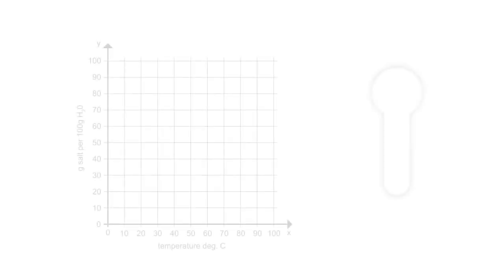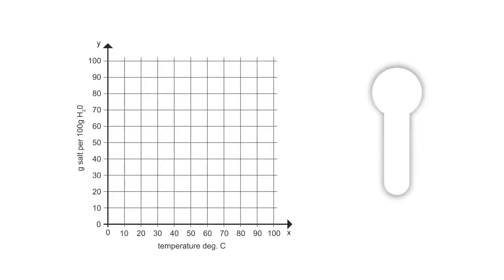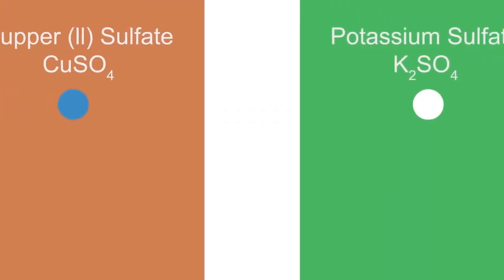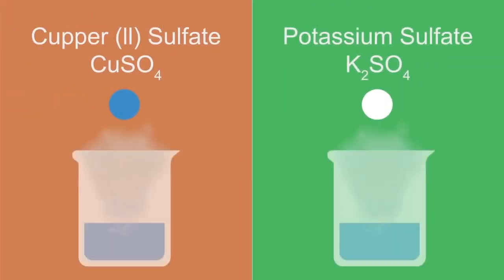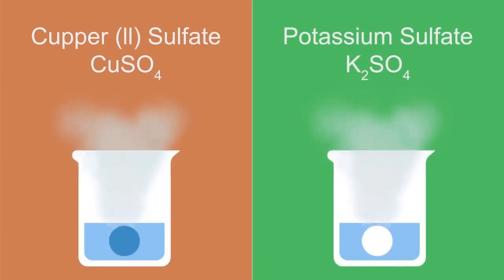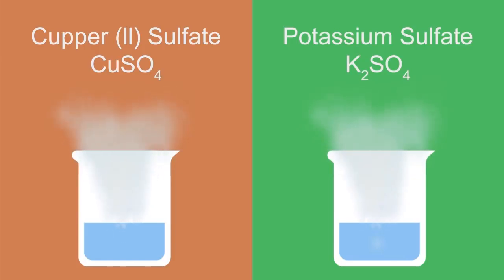The answer is that solubility usually increases with increasing temperature. So if we dissolved CO2 sulfate and potassium sulfate in hotter water, we will find that more of each salt is able to dissolve.